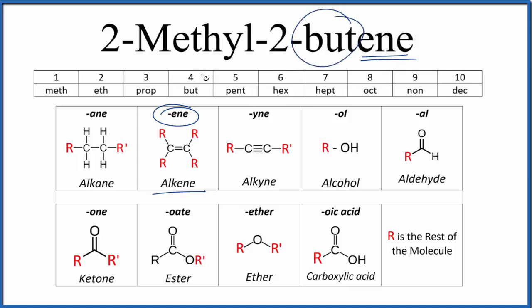Bute, that means four. So we're going to have a chain of four carbons, and the two tells us the double bond will be on the second carbon. So let's put a chain of four carbons up and number them.